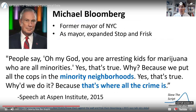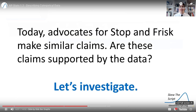People give various reasons for why this might be the case. Here's a quote from Michael Bloomberg, the former mayor of New York City, who expanded Stop and Frisk. He said: "People say, oh my God, you're arresting kids for marijuana who are all minorities. Yes, that's true. Why? Because we put all the cops in minority neighborhoods. Yes, that's also true. Why do we do it? Because that's where all the crime is." So Mayor Bloomberg is saying there's a reason we disproportionately stop people of color — it's because crime rates are higher in those neighborhoods. Today, advocates for Stop and Frisk tend to make similar claims. So let's investigate: are these claims supported by the data?